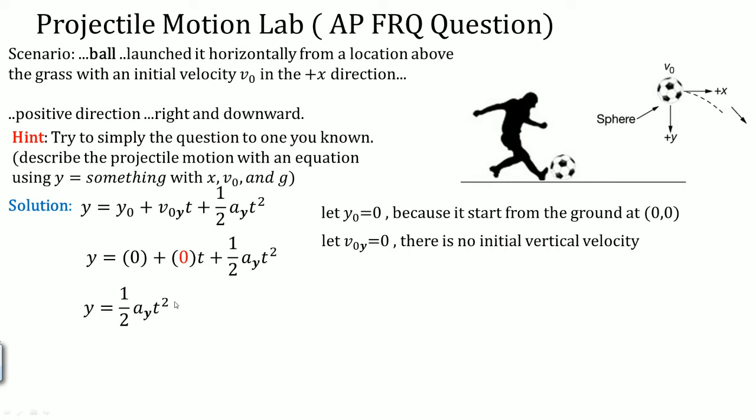You simplify to y equals one half acceleration in the y direction, t squared. We know that the acceleration in the y is g because gravity is the vertical acceleration that the object experiences. So it can be simplified into y equals one half gt squared.